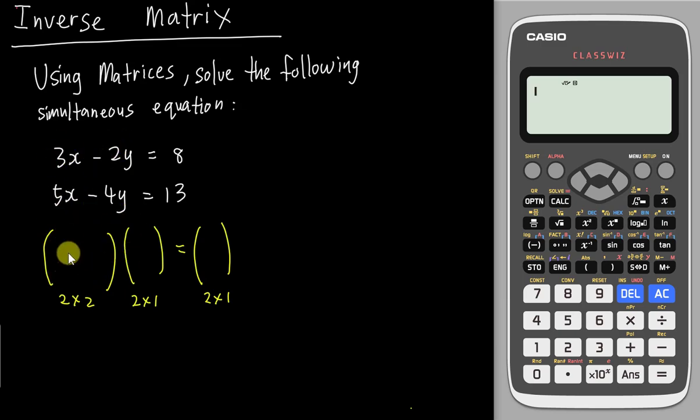But before you copy, you want to make sure x actually align like this and y align like this and equal also must be aligned with the final answer here. Because sometimes the second equation can be something like 4y minus 5x. Then you need to move the x into the same position, move the y into the same position. If they already align for you, then it will be quite easy. This one will be 3, -2, 5, and -4. Then we just write it down: 3, -2, 5, and -4.